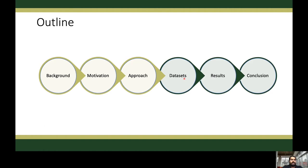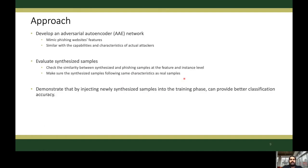Let's discuss our approach. We develop an adversarial autoencoder model to synthesize phishing data that mimics real phishing samples to enhance our training dataset. The idea is to generate similar samples with the capabilities and characteristics of the actual attackers. We check the similarity between the synthesized and phishing samples at two levels: feature level and instance level. We demonstrate that supplementing such datasets with adversarial synthetic data can significantly enhance the effectiveness and accuracy of these detection algorithms.